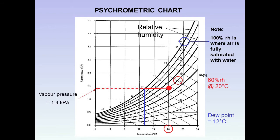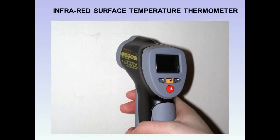So we now know that the dew point temperature is 12 degrees. What we have to do now is measure surface temperatures, and for this one can use an infrared surface temperature thermometer. If the surface temperature is above 12 degrees, then condensation will not be occurring. If it's below 12 degrees, then condensation will be occurring.